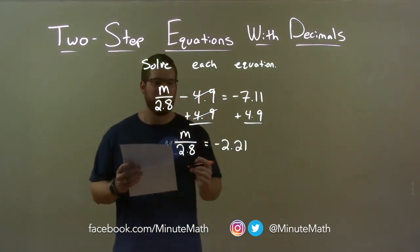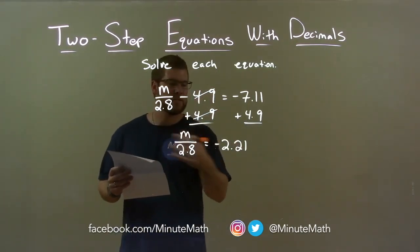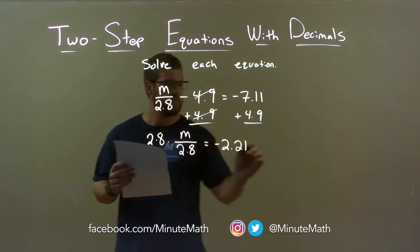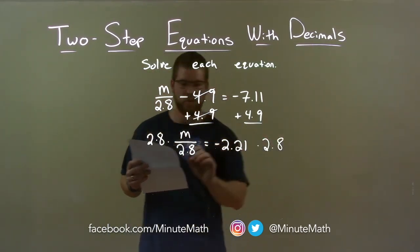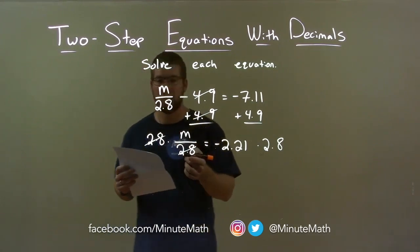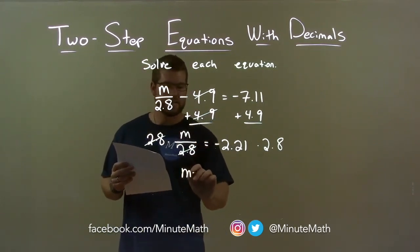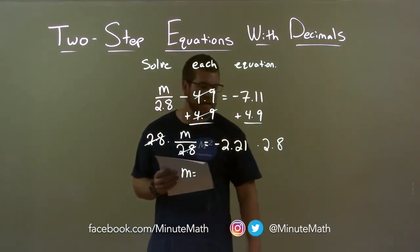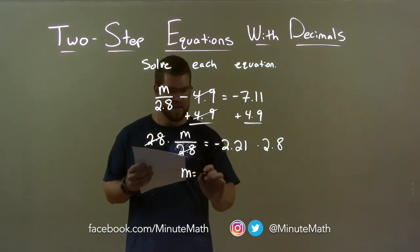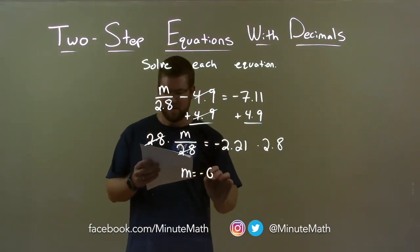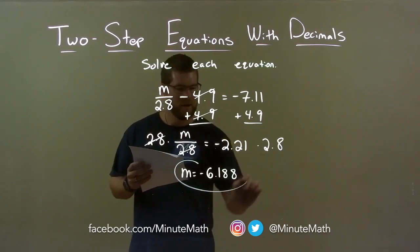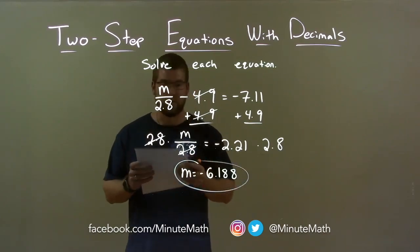Then from there I'm going to multiply 2.8 to both sides. This will eliminate the 2.8 in the denominator, giving me M by itself, and negative 2.21 times 2.8 is negative 6.188. And there we have our final answer.